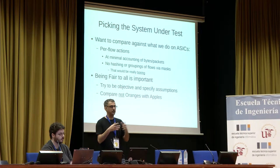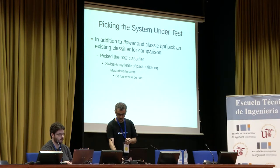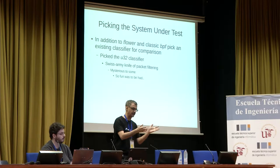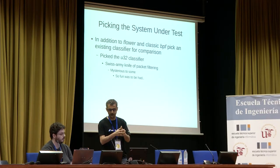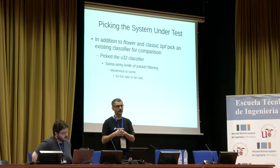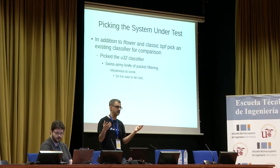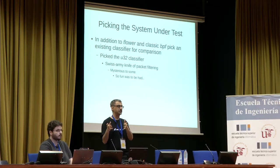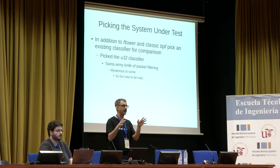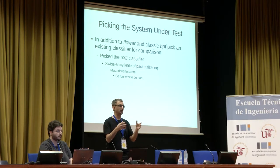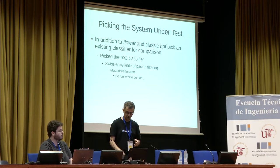We're comparing Flower, classical BPF — not extended BPF, we didn't get to that — and U32. U32 is probably the most popular TC classifier at this point. It's also the most complex if you want to use it beyond its basic feature set. We also figured we could optimize U32 — that was fun motivation. We wanted to show the power of U32 and flex its muscles a little bit.